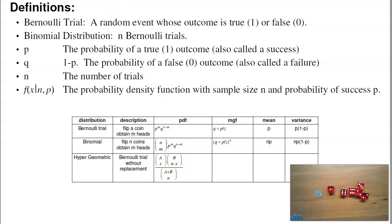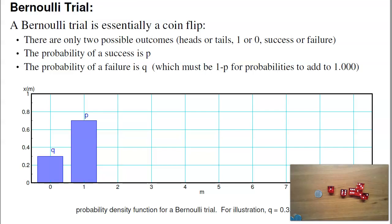A Bernoulli trial only has two possible outcomes. Is it true or false? So if I have this be the number of successes, here's the probability. If I have a probability of P of a success, then a failure has to be 1 minus P, or Q. There's only two possible events in a Bernoulli trial. True or false?